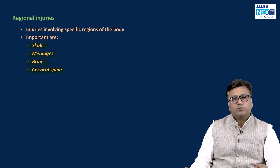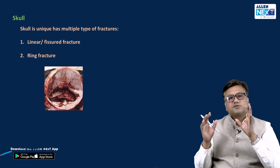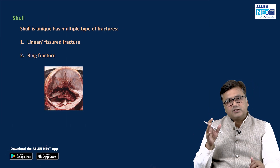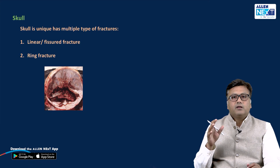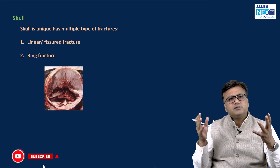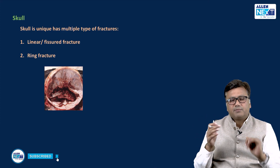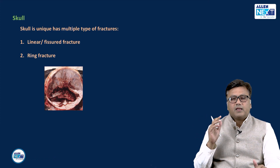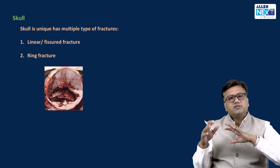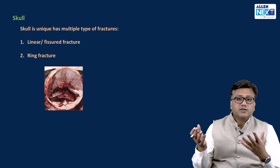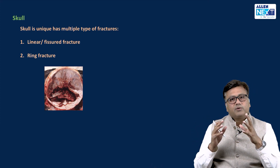Let us begin our talk with skull. The importance of skull in regional injuries is that it tends to have a variety of fractures. There are so many different kinds of fractures that happen in the skull bone, and all these fractures happen in different medico-legal scenarios. Let us talk about them one by one.